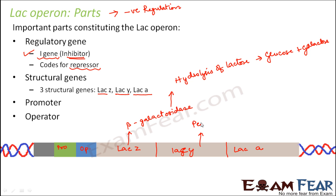Lac y is the next structural gene, which codes for an enzyme called permease. By its name, permease increases the permeability of the cell — specifically, it increases permeability to beta galactoside and helps transport more lactose into the cell. When glucose is not available and E. coli is in a lactose medium, this permease enzyme increases cell permeability so that more lactose can be transported into the cell.